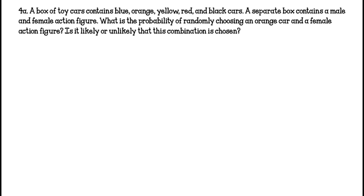4A. A box of toy cars contains blue, orange, yellow, red, and black cars. So that's five different colors of cars. A separate box contains a male and female action figure. So that's two different genders of action figures.